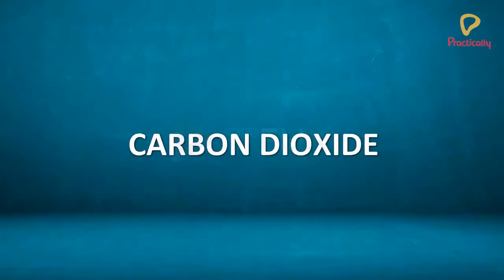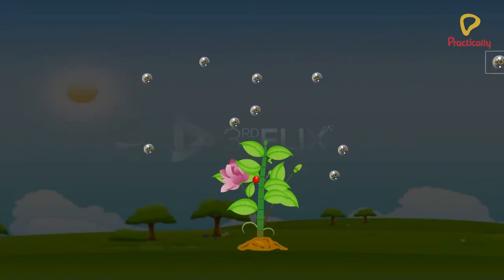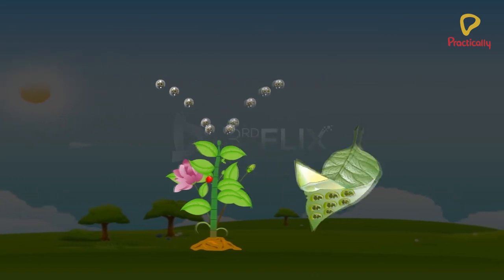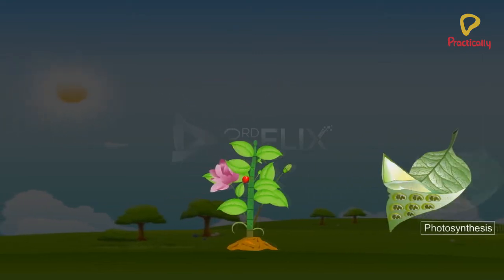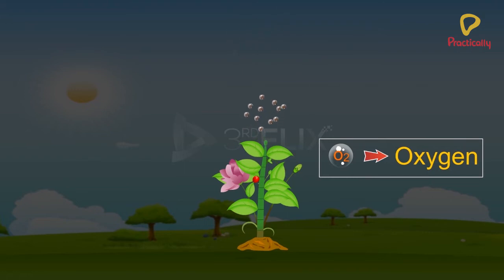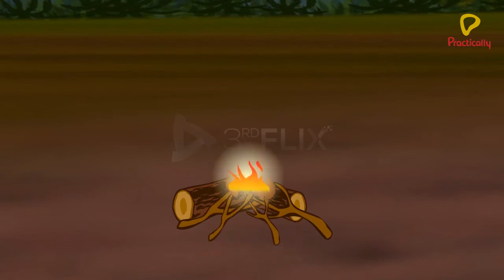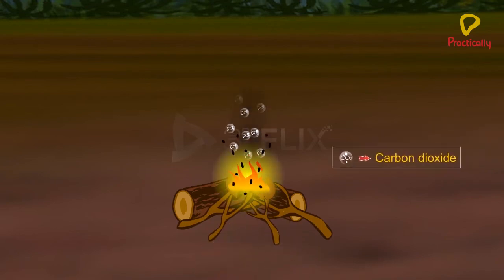Carbon dioxide. Carbon dioxide occupies a small percentage of air. Plants utilize carbon dioxide during the day to perform the process of photosynthesis. They release oxygen and clean up the atmosphere.